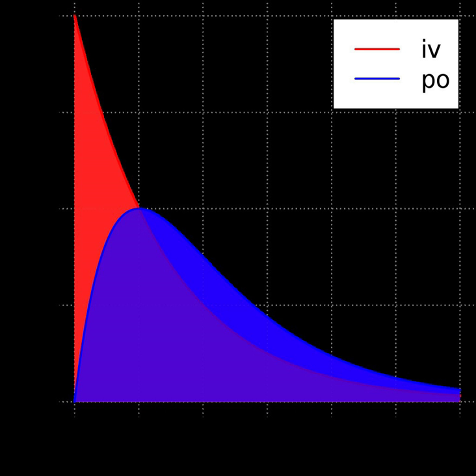In pharmacology, relative bioavailability measures the bioavailability estimated as the AUC of a formulation of a certain drug when compared with another formulation of the same drug, usually an established standard, or through administration via a different route. When the standard consists of intravenously administered drug, this is known as absolute bioavailability.